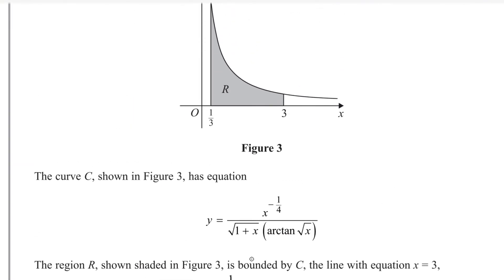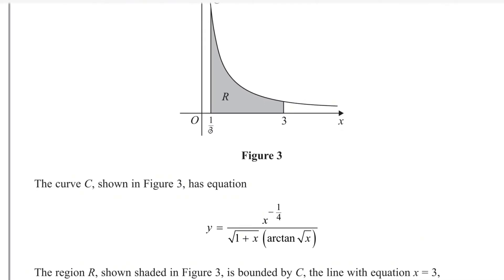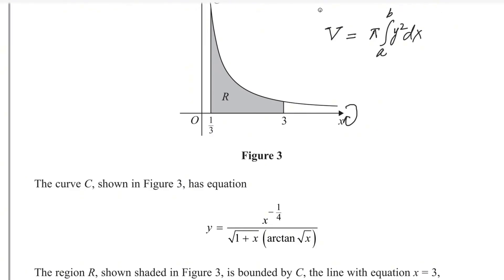Look at the figure. This shaded region is bounded by the curve, the line x equals 1 over 3, the line x equals 3, and the x-axis. Once it is rotated about the x-axis through 360 degrees, a solid is formed. We can find the volume of that solid using this formula — you have to memorize this formula: π times the integral of y squared dx, with limits from a to b. This is the standard formula to find the volume of the solid when the graph is rotated about the x-axis.